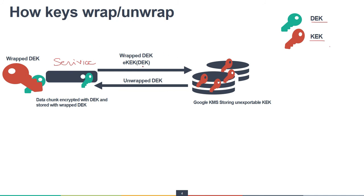The DEK is encrypted with the KEK, and the KEK is stored in Google KMS. All key encryption keys shown in red are stored in Google KMS. After the request, Google KMS returns the unwrapped DEK so that the service can decrypt the data accordingly. Similarly, every DEK is generated on the service and sent to Google KMS so that it can be stored in wrapped form by the KEK on the same instance.